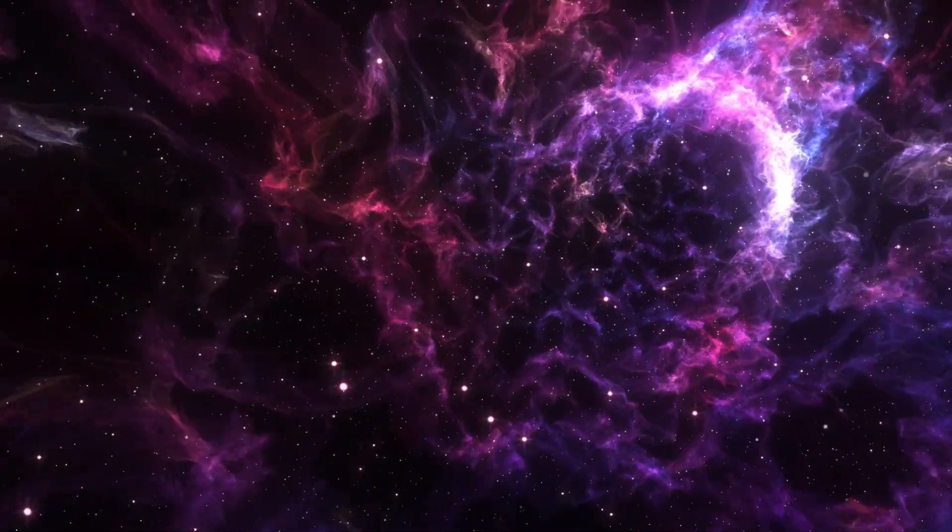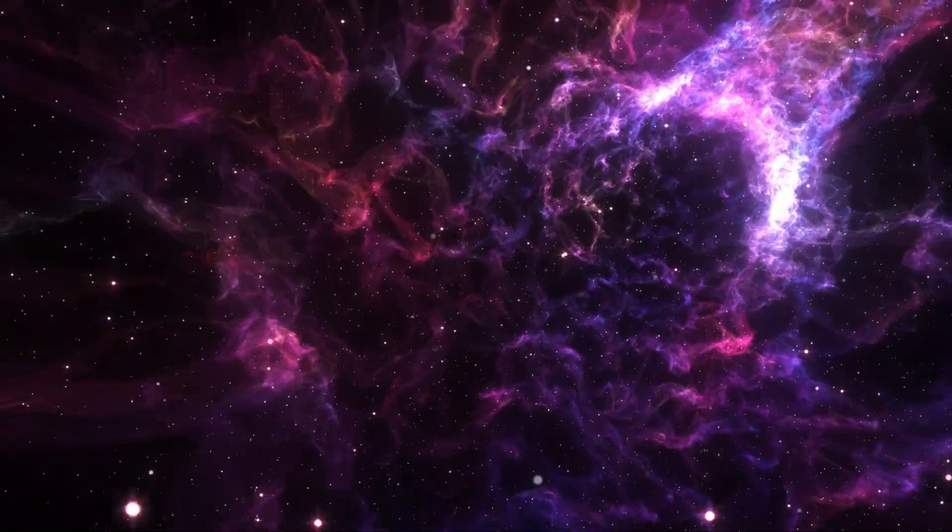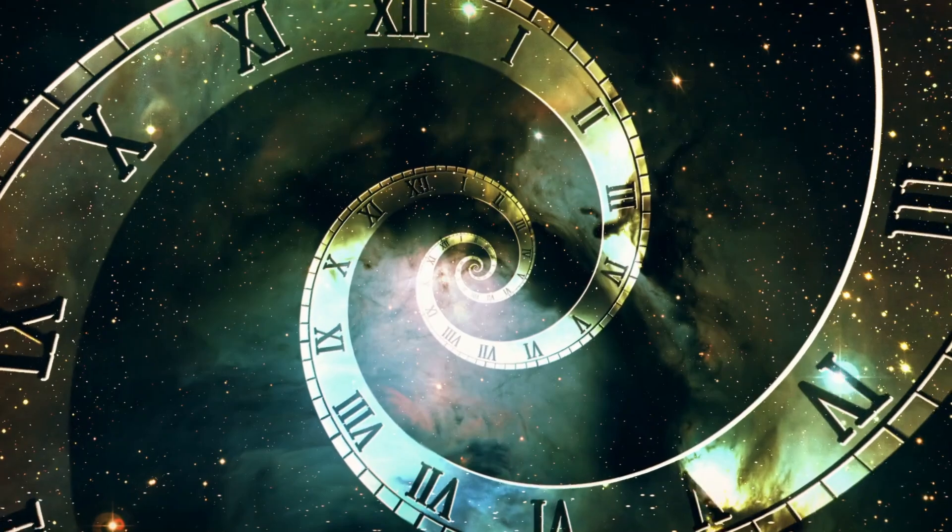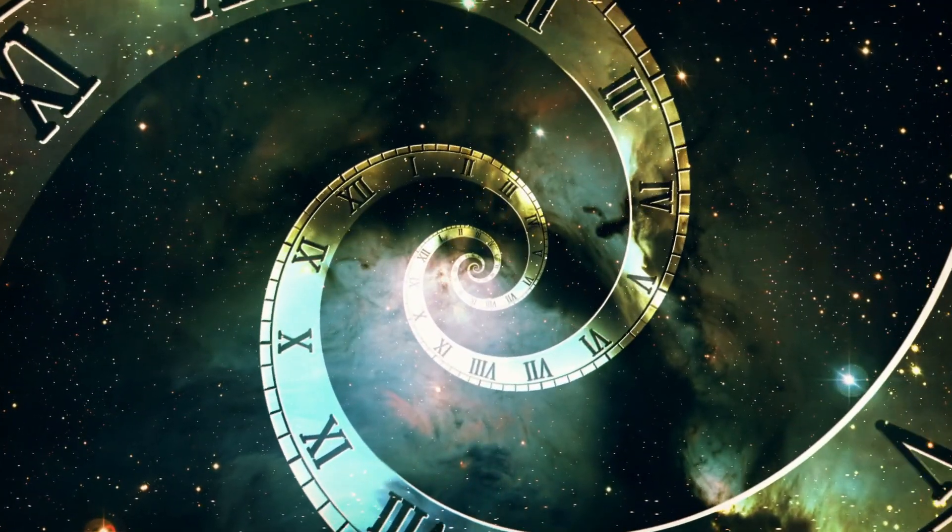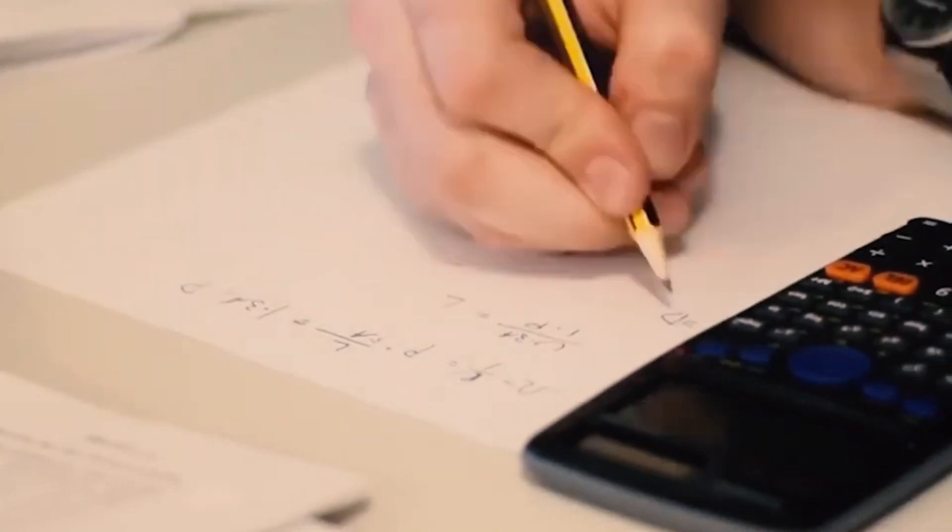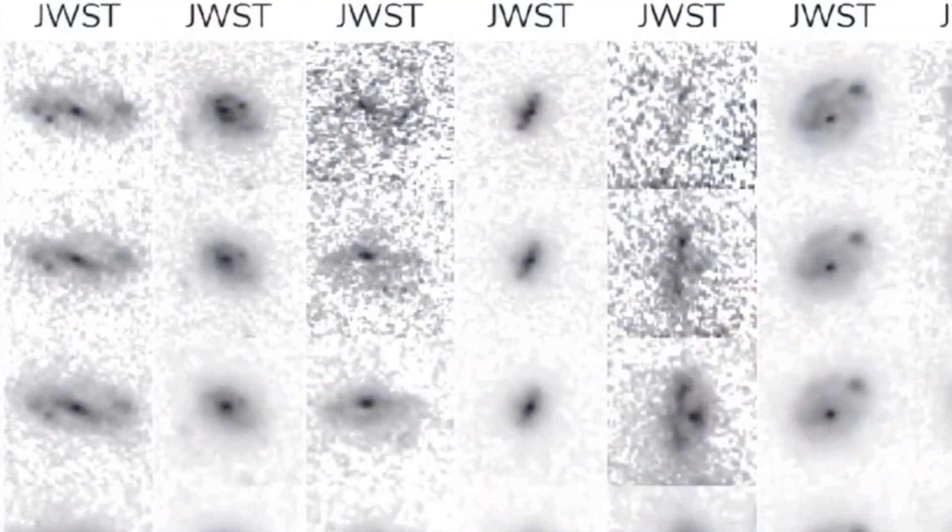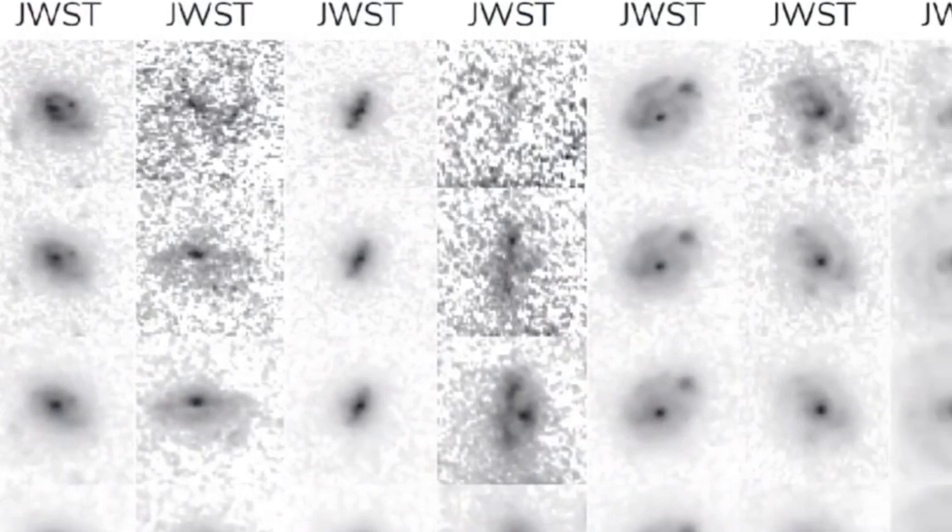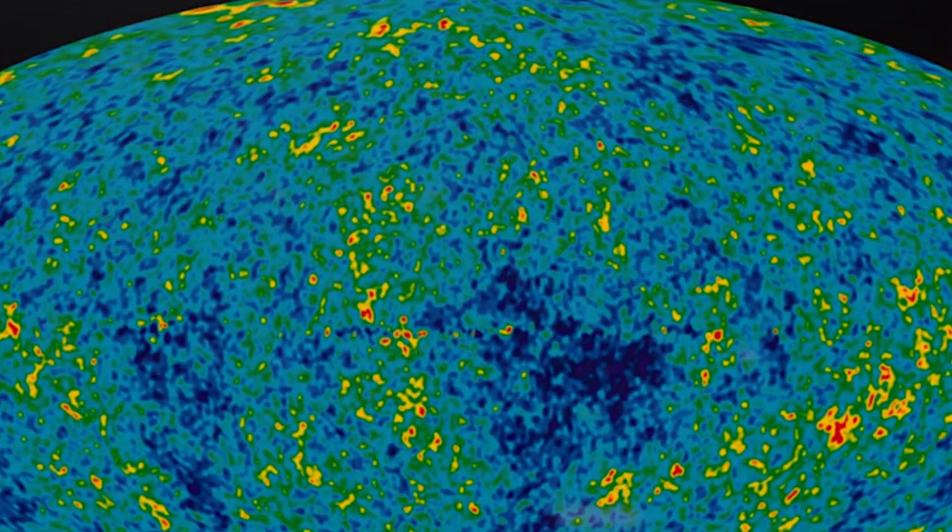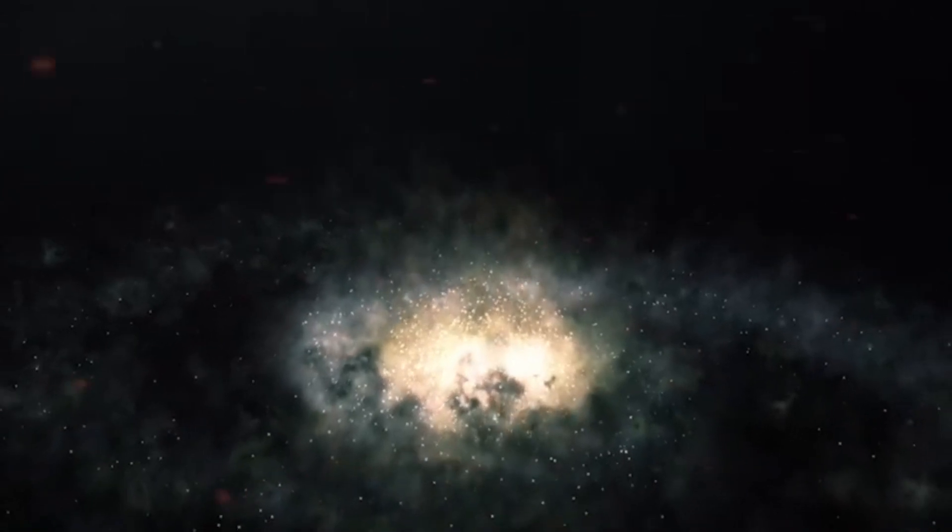The researchers still need more data to confirm that these galaxies are as big as they look and date as far back in time. Their preliminary observations, however, offer a tantalizing taste of how James Webb could rewrite astronomy textbooks. Another possibility is that these things are a different kind of weird object, such as faint quasars, which would be just as interesting, Nelson said.